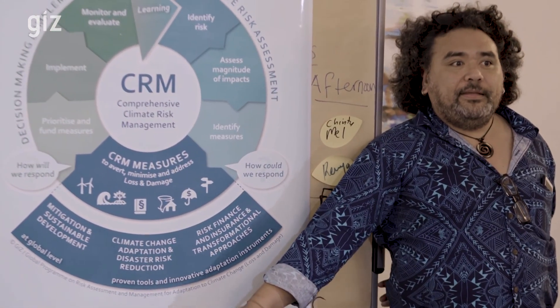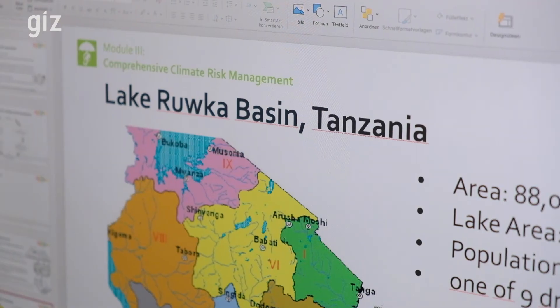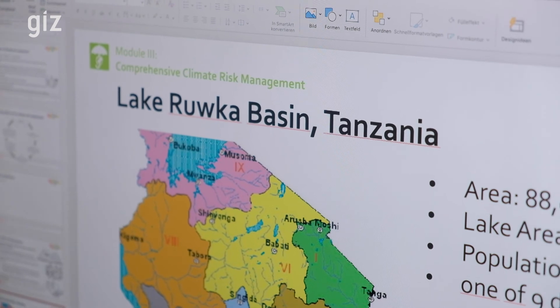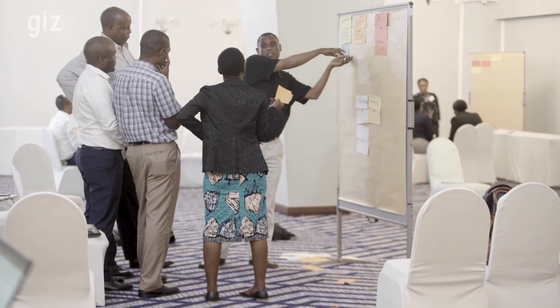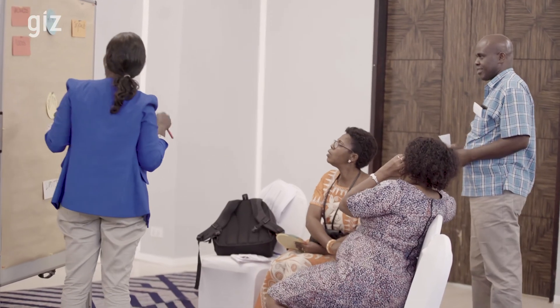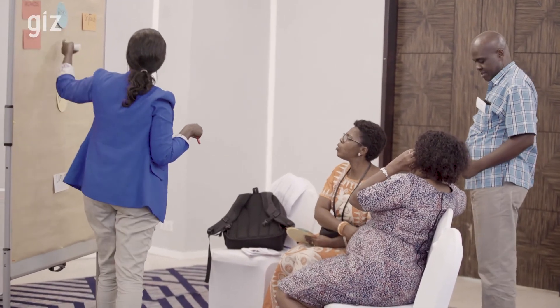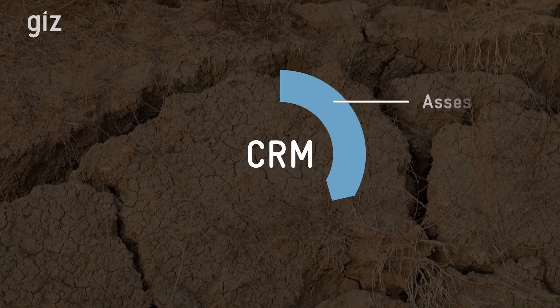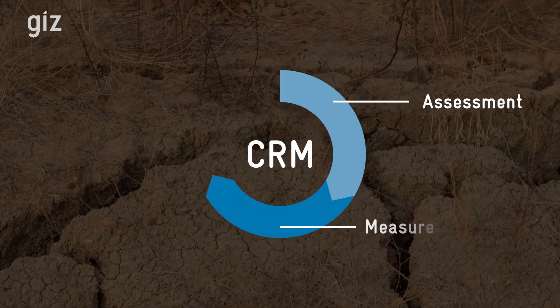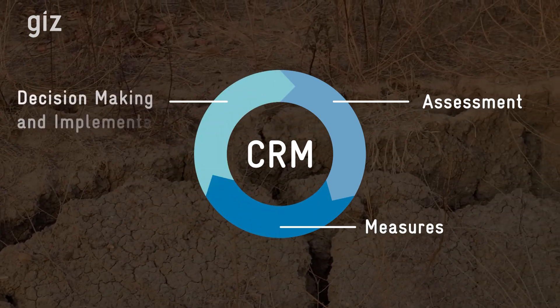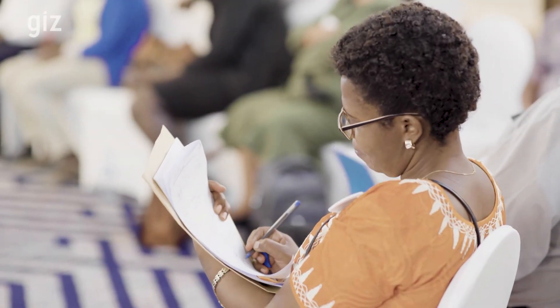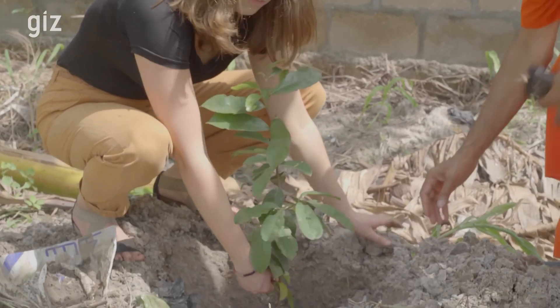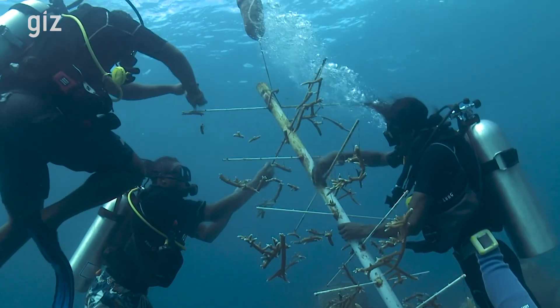Climate Risk Management aims at reducing the negative consequences of climate change through an integrated and participatory approach. It comprises the following three steps: assessment of climate risks, selection of CRM measures, and decision-making and implementation. In order to effectively manage climate-related risks, it involves a combination of proven and innovative instruments.